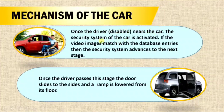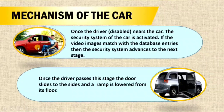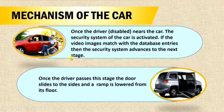Once the driver nears the car, the security system is activated. It uses cameras to check whether the person approaching is the actual owner by cross-referencing with images stored in its database. If the person matches, the door opens.